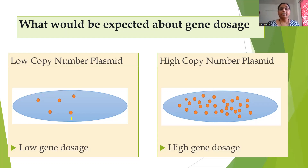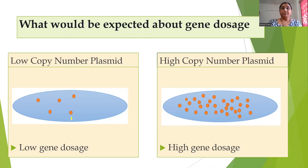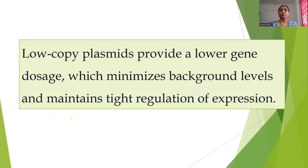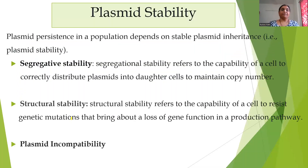To avoid this, the foreign gene — when it has to be expressed — should be cloned into low or medium copy number plasmids, so there will not be metabolic drain and the expression vector and the bacterial cell will coexist well. Low copy number plasmids provide a lower gene dosage, which minimizes background levels and maintains tight regulation of expression. Plasmid stability refers to plasmid persistence in the population, depending on stable plasmid inheritance.